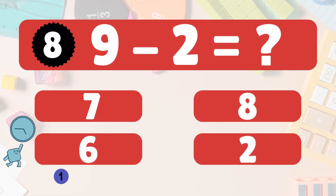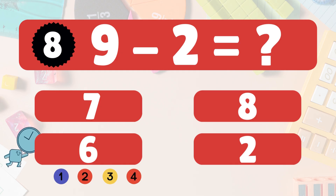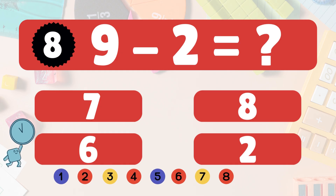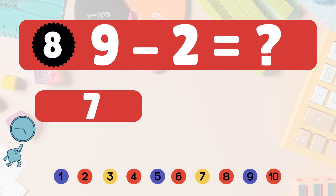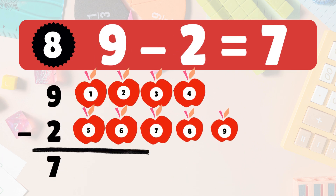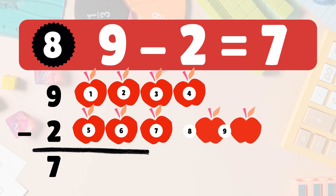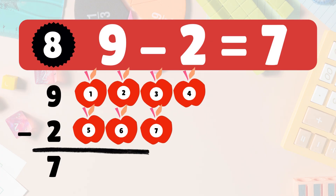You're getting it! Next, 9 minus 2 equals what? 9 minus 2 is 7. Here we have 9 apples. Take 2 away — 7 apples left: 1, 2, 3, 4, 5, 6, 7. So 9 minus 2 is 7. Woohoo!